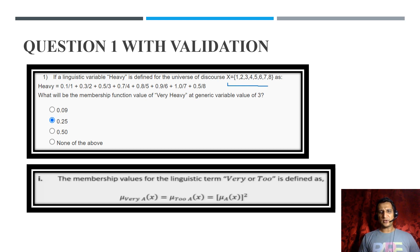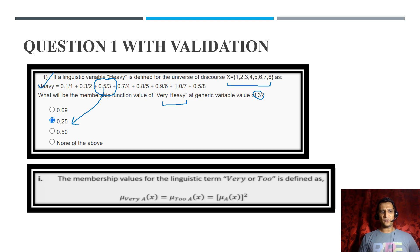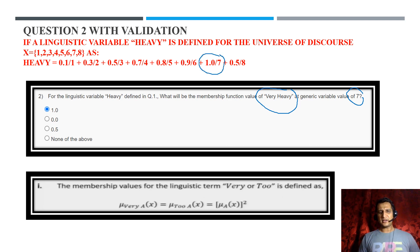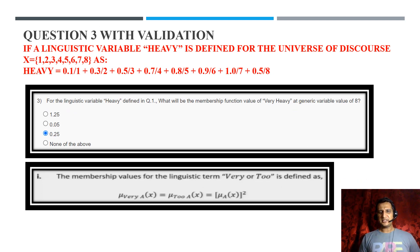We are given a universe of discourse 1 to 8 and the fuzzy set A 'heavy', with each element having its membership value. Question 1: what is the membership value for 'very heavy' at generic variable 3? We square the membership value of element 3, which gives 0.25 — correct answer is B. Question 2: 'very heavy' at generic variable 7. Squaring its membership value gives 1, so correct option is A.